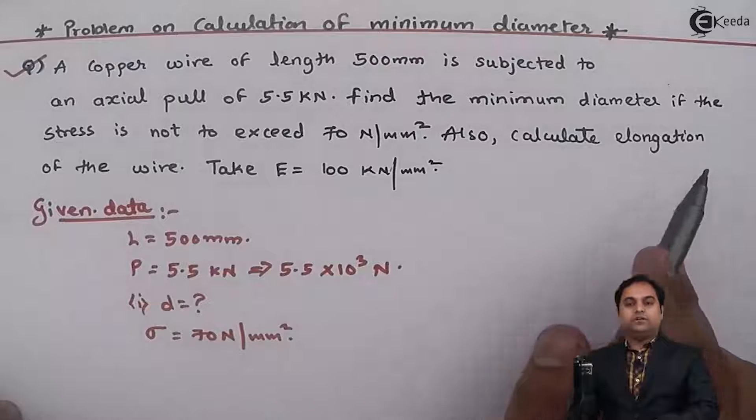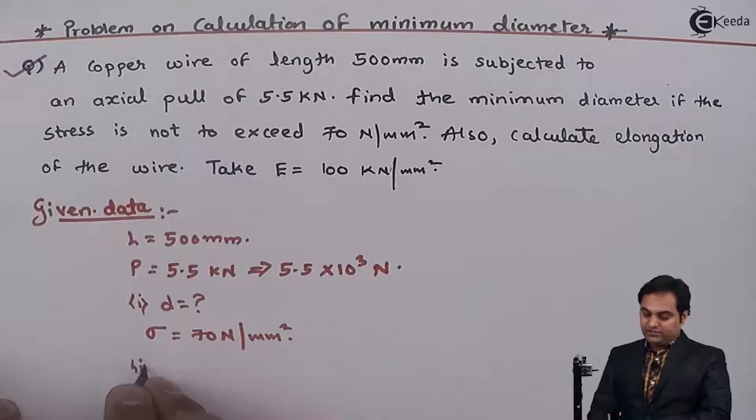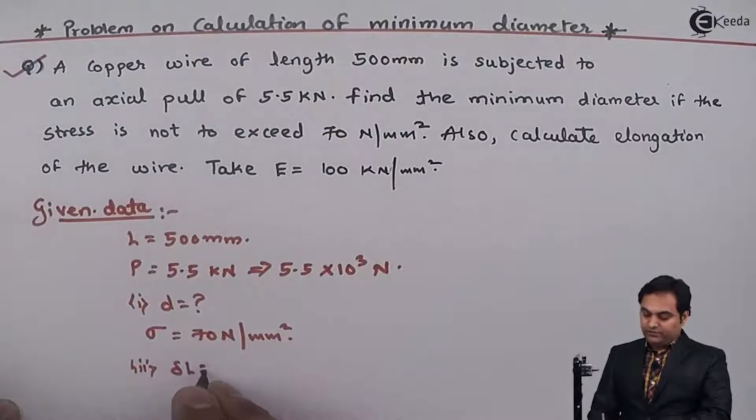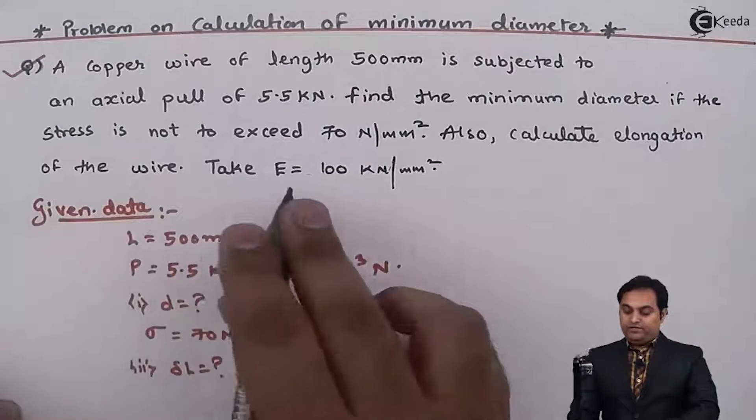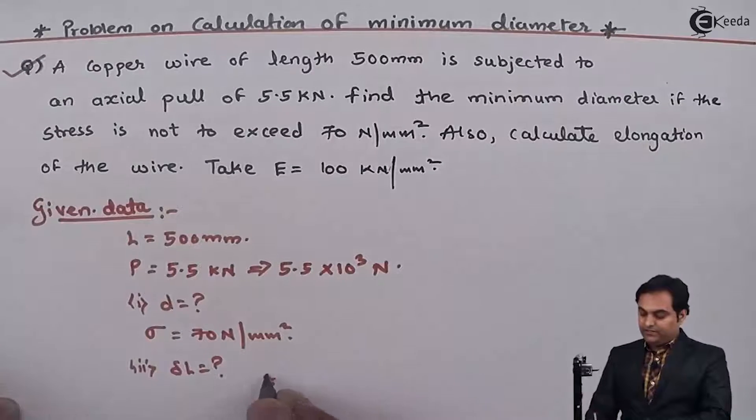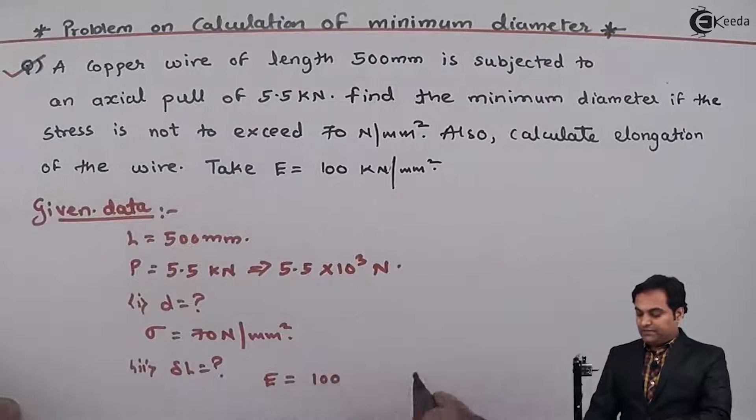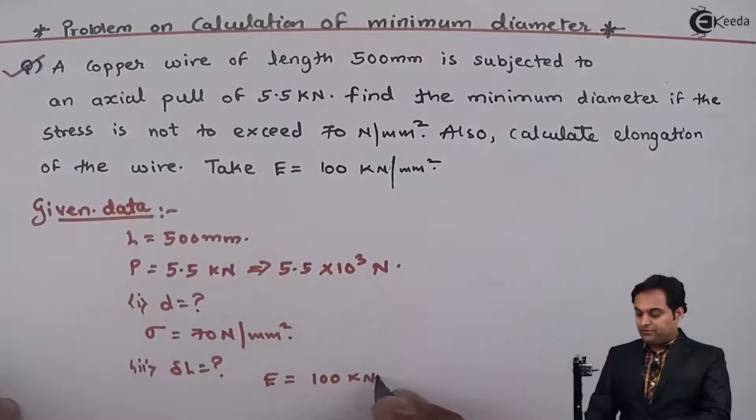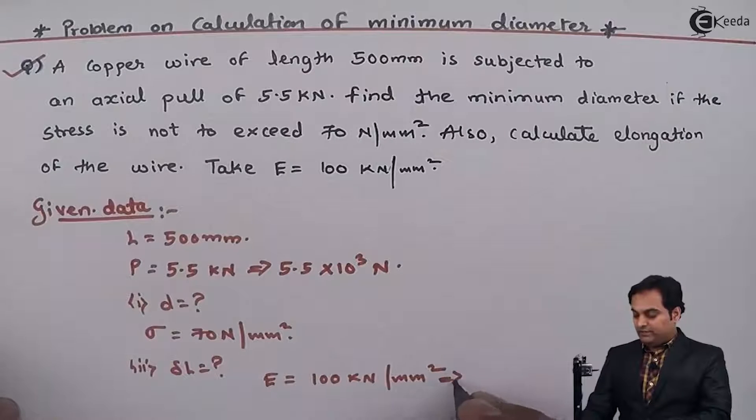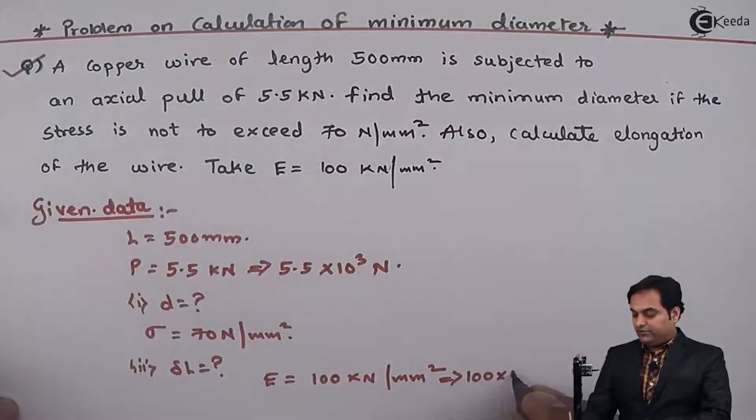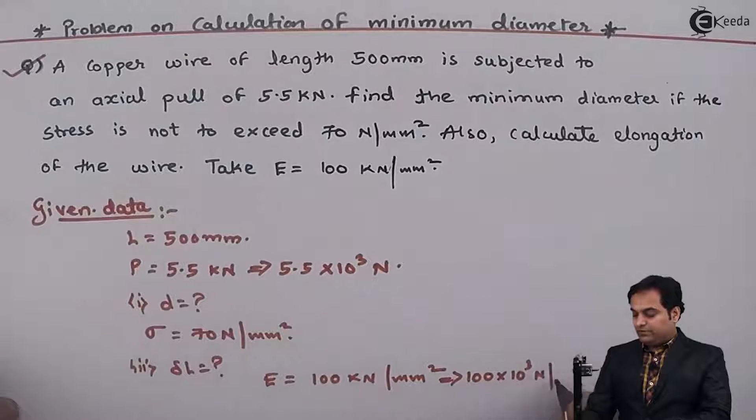Also calculate elongation. This is the second question we have to find out, the elongation in the wire. Take capital E, that is Young's modulus, as 100 kN per mm square, which we can convert and this will be 100 into 10 raise to 3 Newton per mm square.